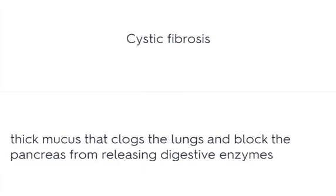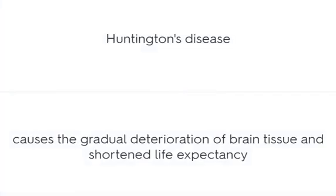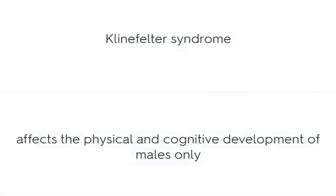Cystic fibrosis produces thick mucus that clogs the lungs and blocks the pancreas from releasing digestive enzymes. Tay-Sachs disease causes destruction of the nervous system. Huntington's disease causes the gradual deterioration of brain tissue and shortened life expectancy. Klinefelter syndrome affects the physical and cognitive development of males only.